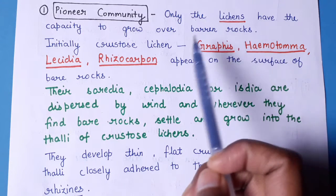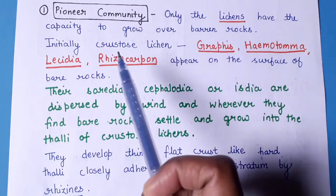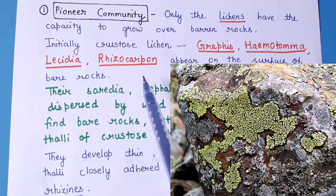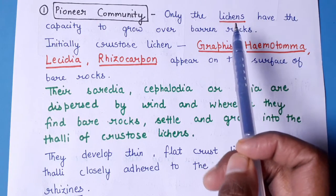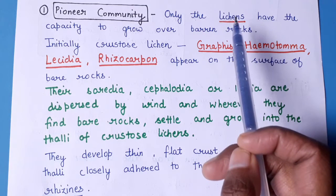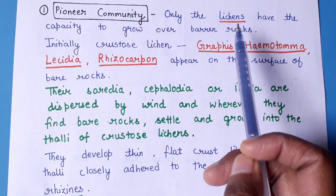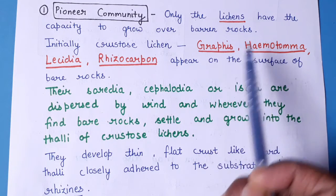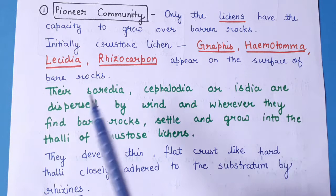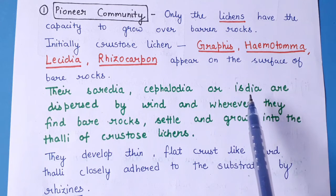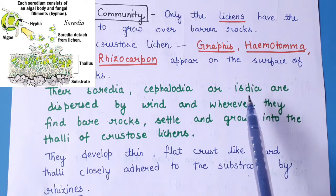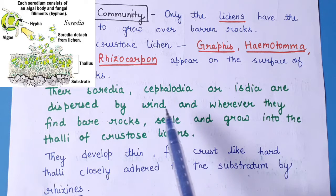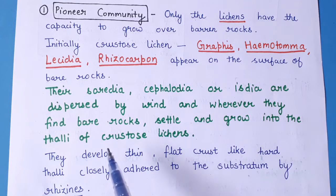In the pioneer community, lichens grow over the barren rocks. Initially crustose lichens like Graphis, Haematoma, Lycidia, and Rhizocarpon grow on these barren rocks. There are three types of lichens: crustose, foliose, and fruticose. Crustose lichens are the first to grow, and they do so via asexual structures called soredia, cephalodia, and isidia, which are carried by wind and settle over bare rocks.